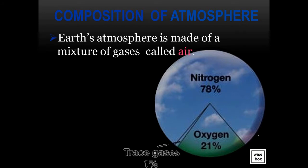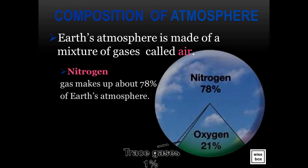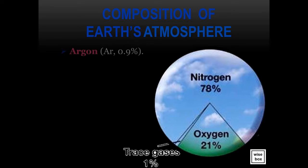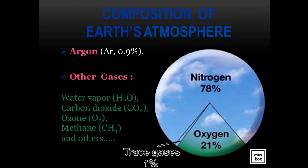Earth's atmosphere is made of a mixture of gases called air. Nitrogen is a gas that makes up about 78% of Earth's atmosphere. Oxygen is the second most abundant gas, which makes up 21% of Earth's atmosphere. Argon is about 0.9% of the Earth's atmosphere. There are also other gases like water vapor, carbon dioxide, ozone, and methane.